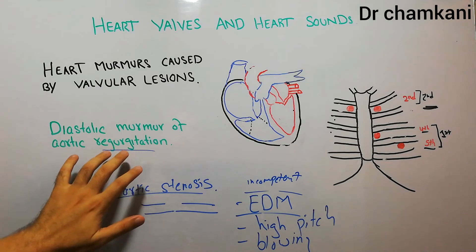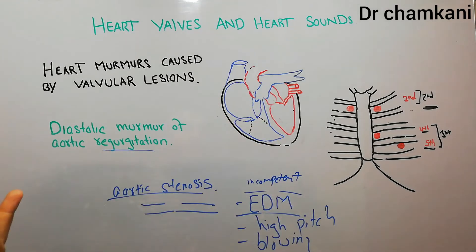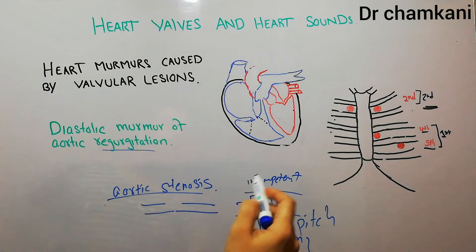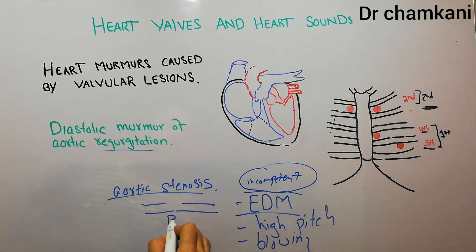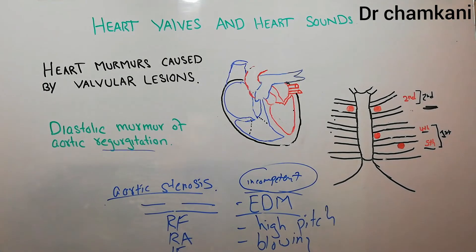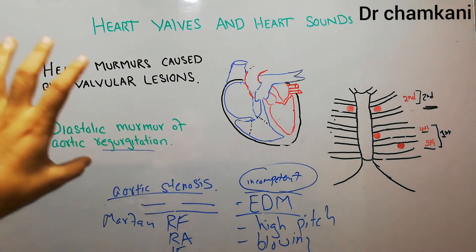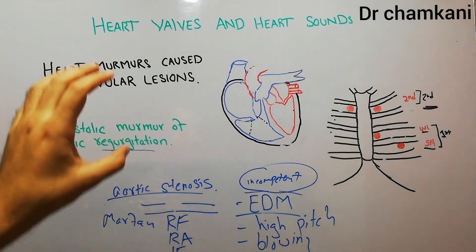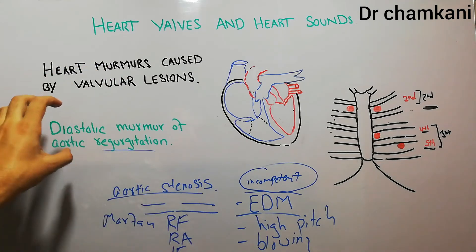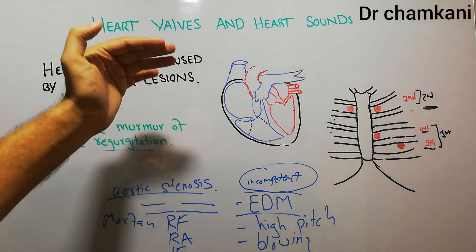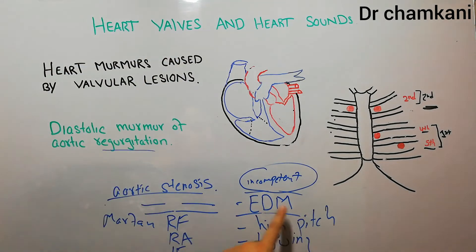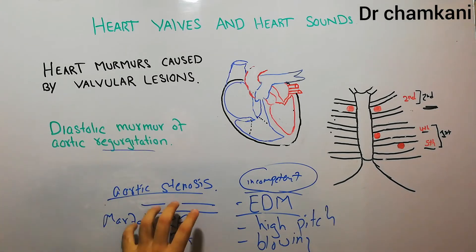What basically causes aortic incompetence that leads to aortic regurgitation? There are a lot of conditions which cause incompetence of the aortic valve, like rheumatic fever, rheumatoid arthritis, infective endocarditis, and some connective tissue diseases like Marfan's syndrome. We are discussing these things from a physiology point of view: the murmur in aortic valve incompetence occurs due to aortic regurgitation because the blood moves back in diastole, and it is a diastolic murmur — an early diastolic murmur, high pitched, and blowing in quality.